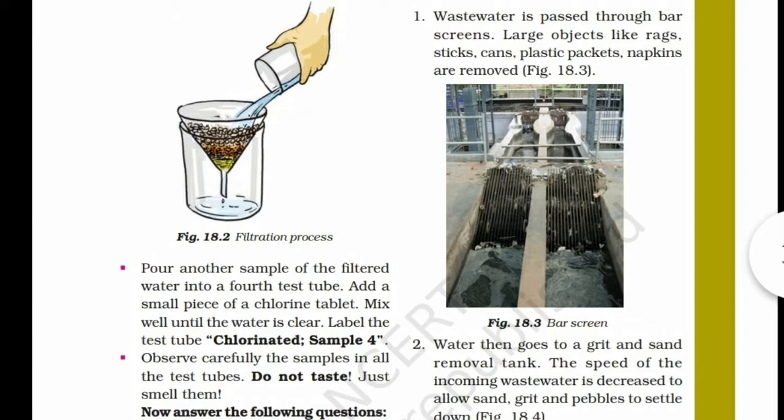Second process: water then goes to a grit and sand removal tank. The speed of the incoming wastewater is decreased to allow sand, grit, and pebbles to settle down.